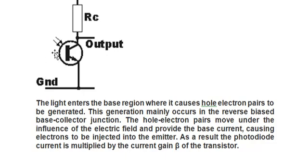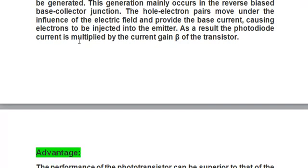Whenever the light strikes the base region, the output will be generated. This total circuit depends upon the light — light is increased, the output is increased; light is decreased, the output is decreased. But in a no-light condition also, a small amount of voltage output is still present. This is one of the disadvantages of the phototransistor.